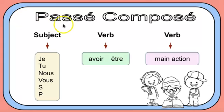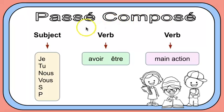In this tutorial, we are going to look at the passé composé. The passé composé is the past tense in French that refers to a specific point in time — for example, last week, last month, last year.